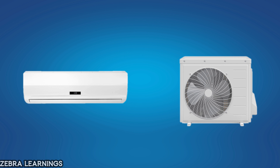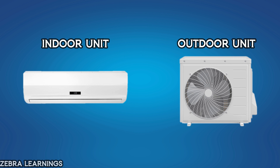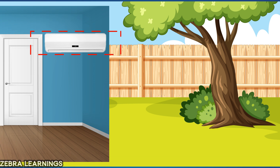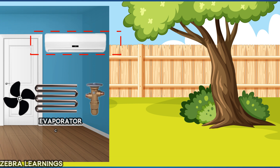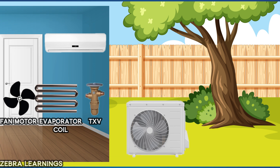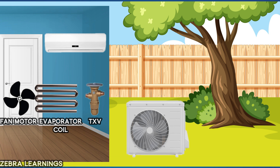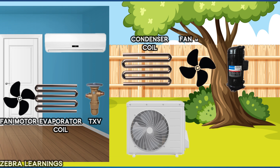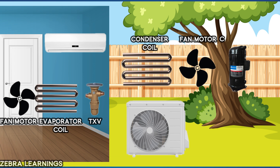A split AC has two units. One is the indoor unit and the other is the outdoor unit. The indoor unit is installed inside the house and it has an evaporator coil, fan motor, and expansion valve. The outdoor unit is installed outside the house and it has a condenser coil, fan motor, and compressor.